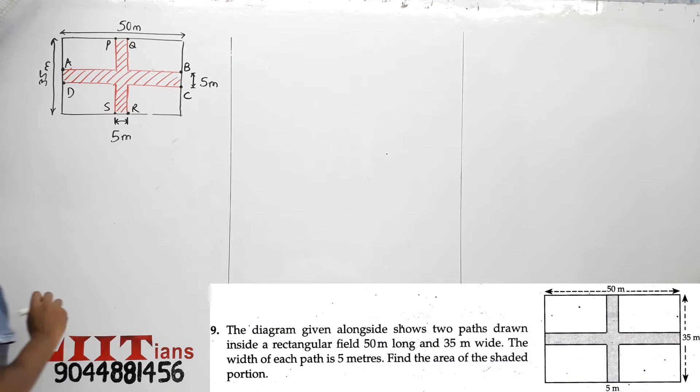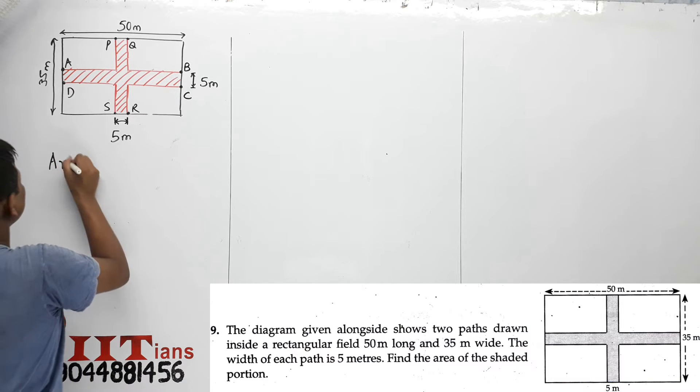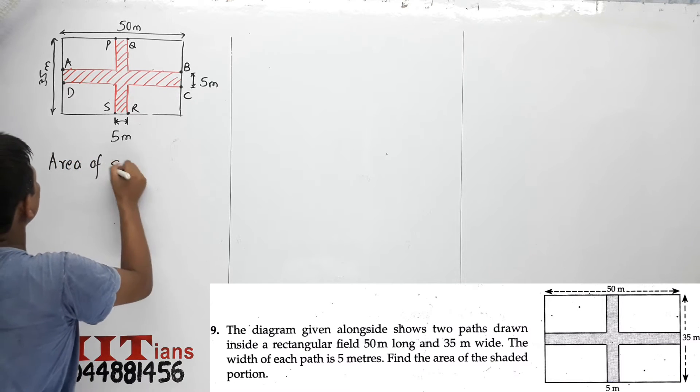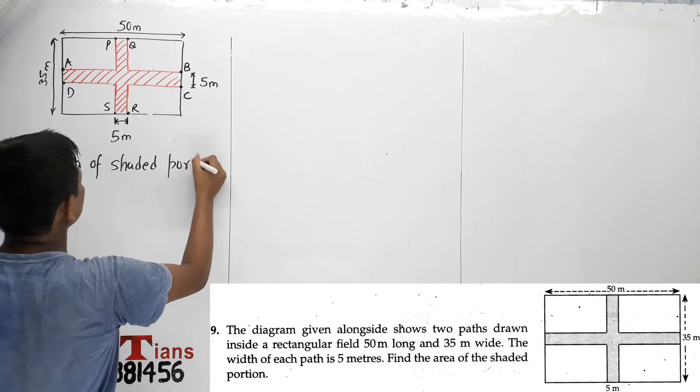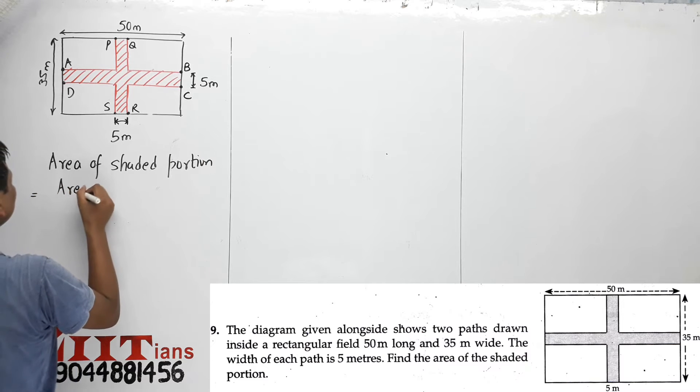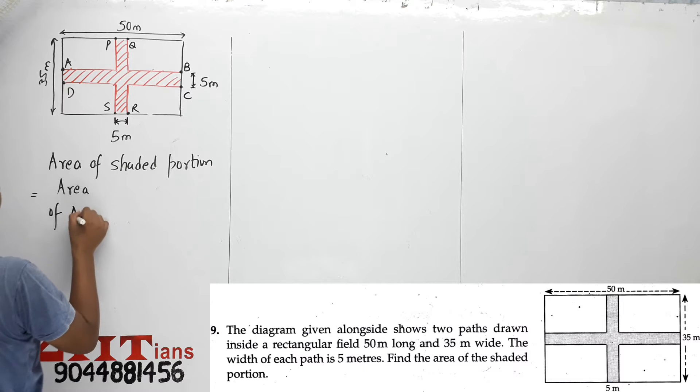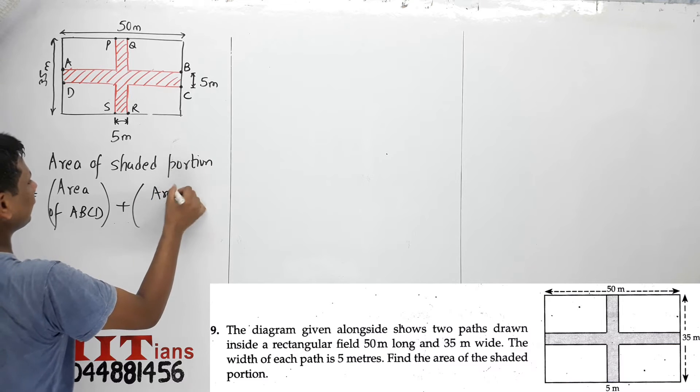Any normal student's approach would be that we will find the area of shaded portion is equal to area of rectangle ABCD plus area of rectangle PQRS.